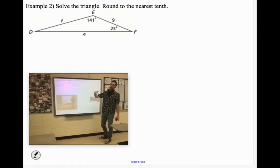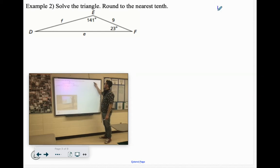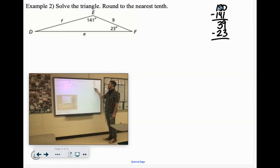Solve this triangle. First thing, I'll go ahead and get that third angle. We could just do 180 minus 141, which would give you 39. And then we've got to subtract the 23 still, which will give us a 16 degree angle over here.